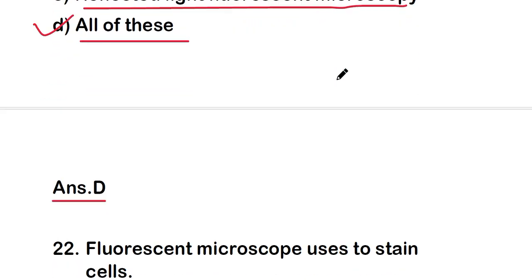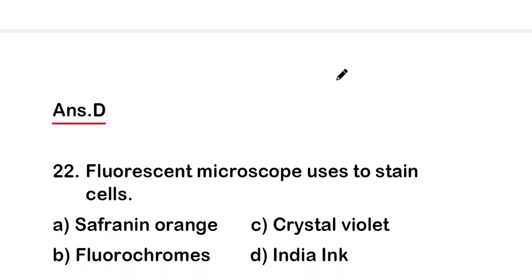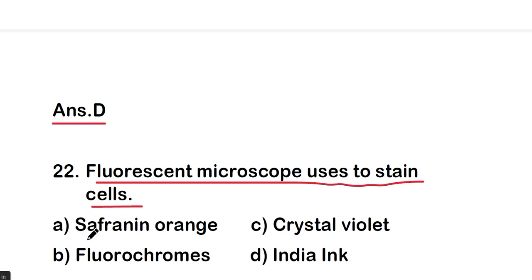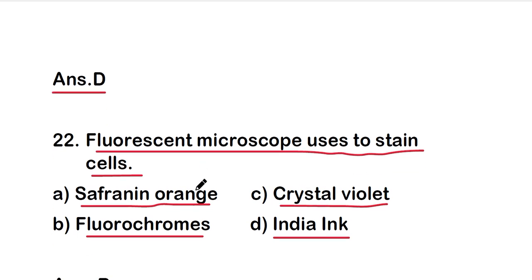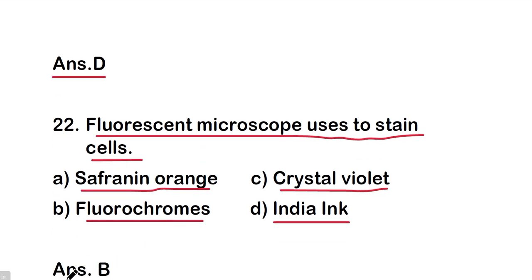The next question is: a fluorescent microscope uses which stain to stain cells — safranin orange, fluorochromes, crystal violet, or India ink? The right answer is option B, that is fluorochromes. Fluorochromes are used in fluorescent microscopy as a stain to stain the cell.